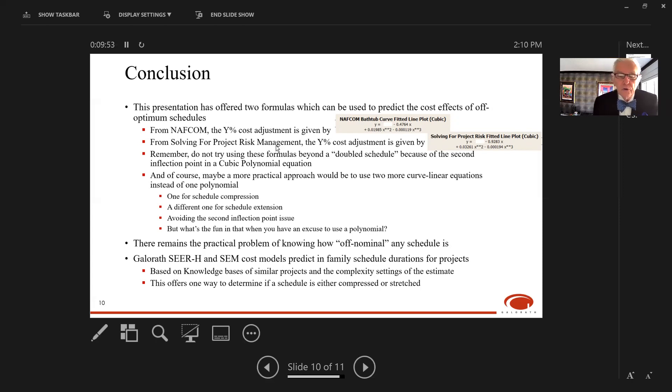There remains another practical problem—knowing how off-nominal any schedule may be. A solution is the Gallarath SEER-H and SEER-SIM models for hardware and software respectively. They not only estimate costs but also predict schedule, providing an in-family schedule duration for projects based on their knowledge bases. That's one way to know if your schedule is compressed or stretched, then use these polynomials to make a cost adjustment.